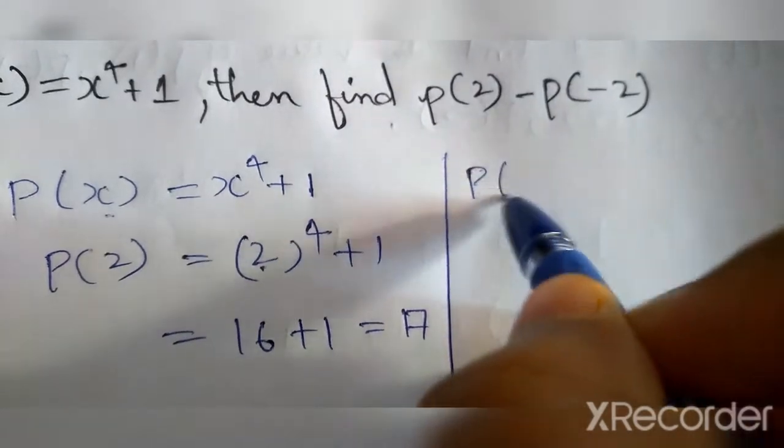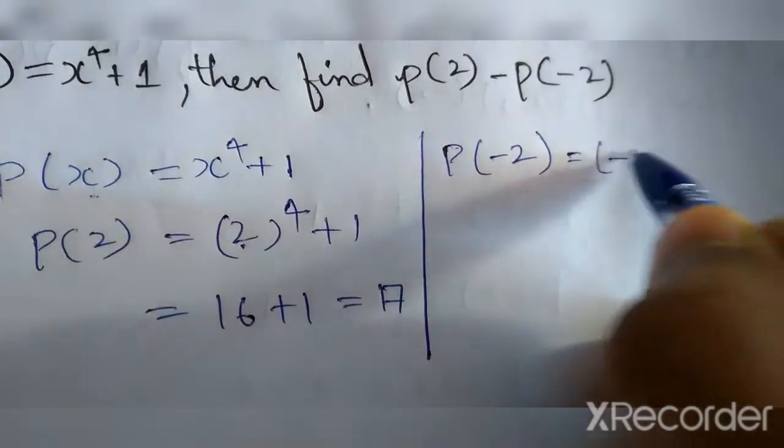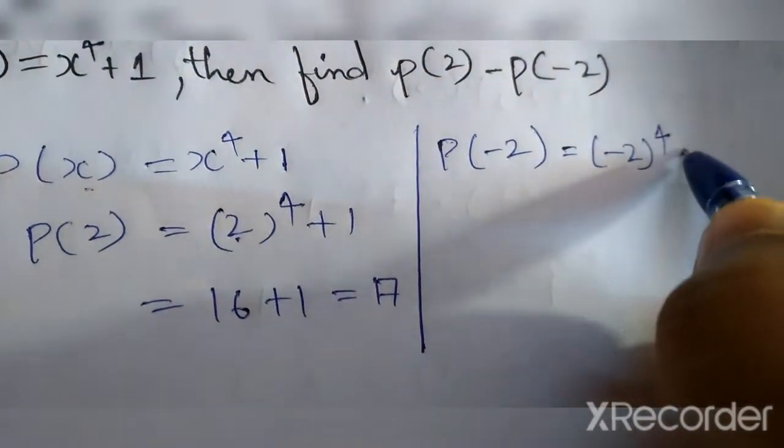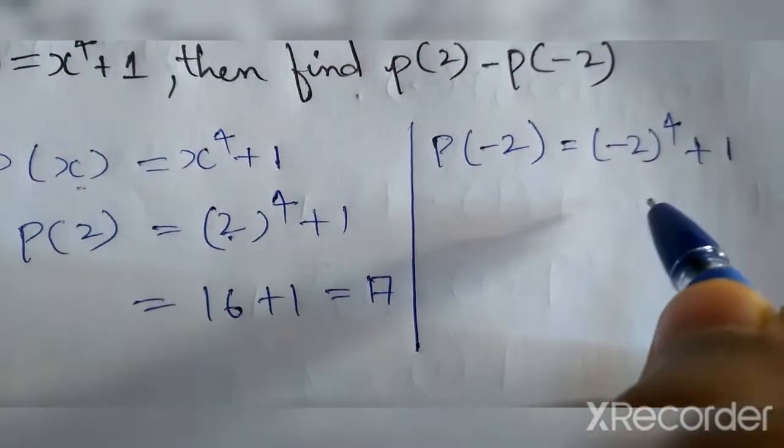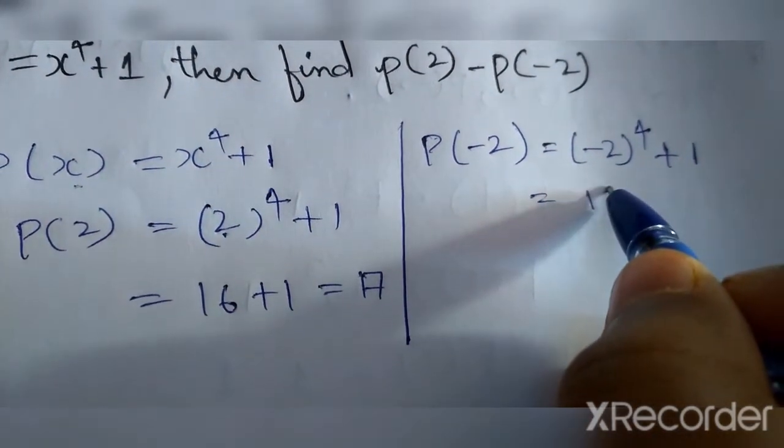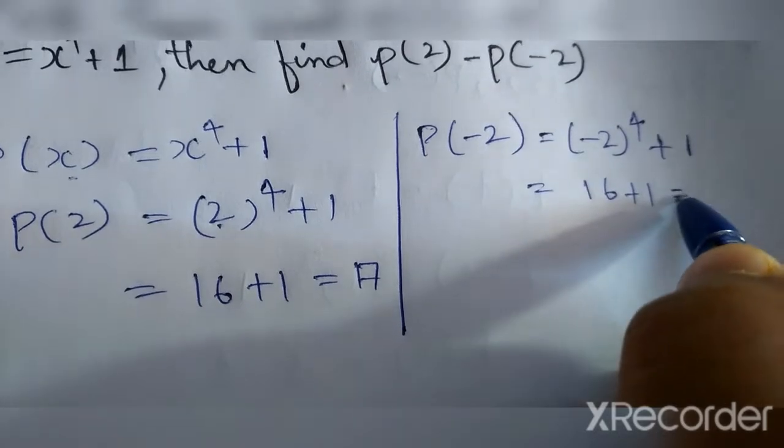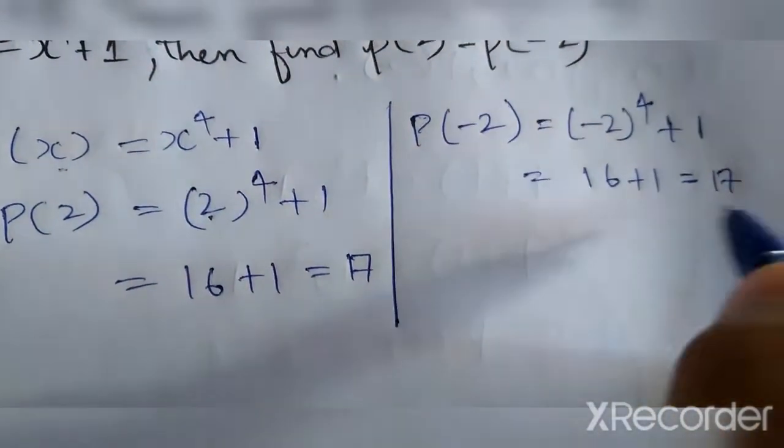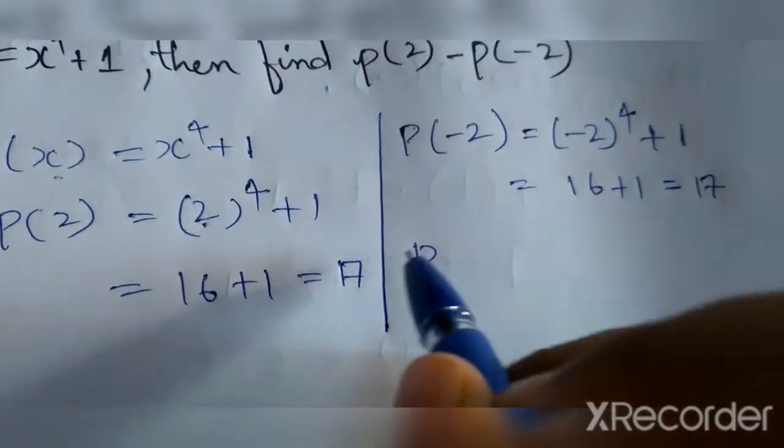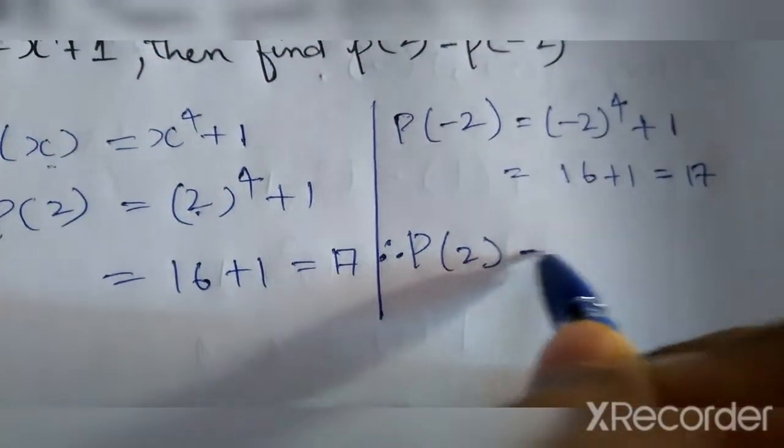Now for p(-2), it equals (-2)^4 plus 1. So 16 plus 1 equals 17. This is also 17. Therefore, p(2) minus p(-2) equals 17 minus 17, which equals 0.